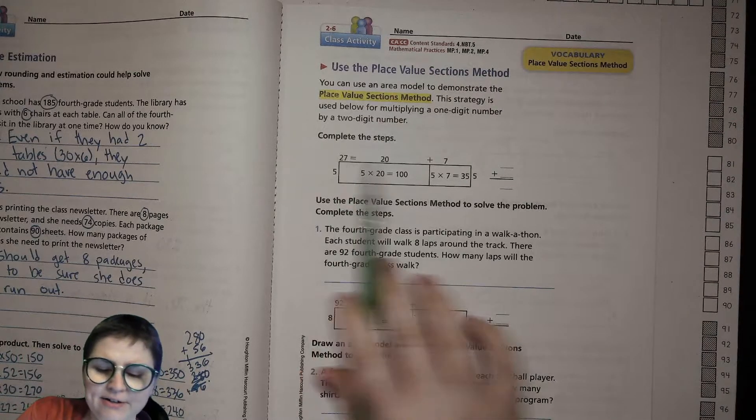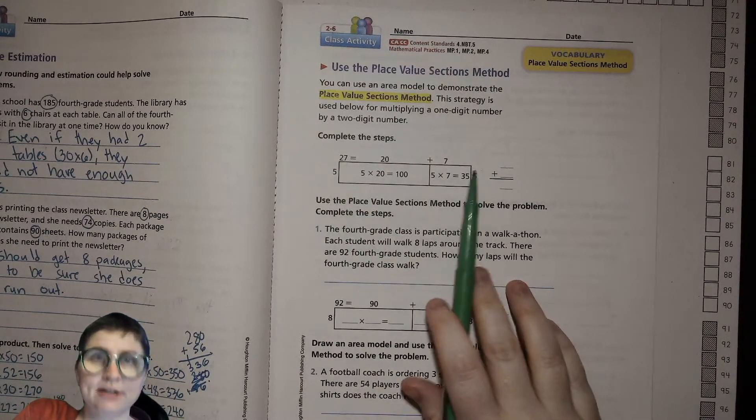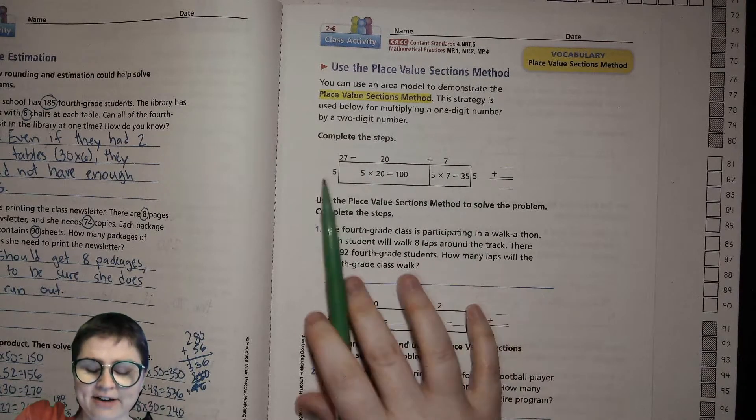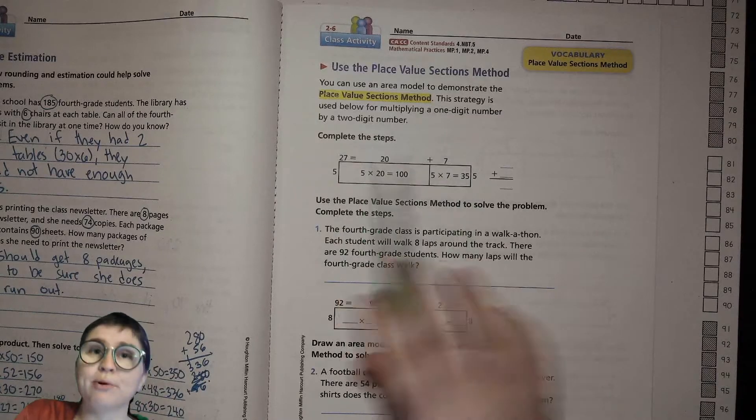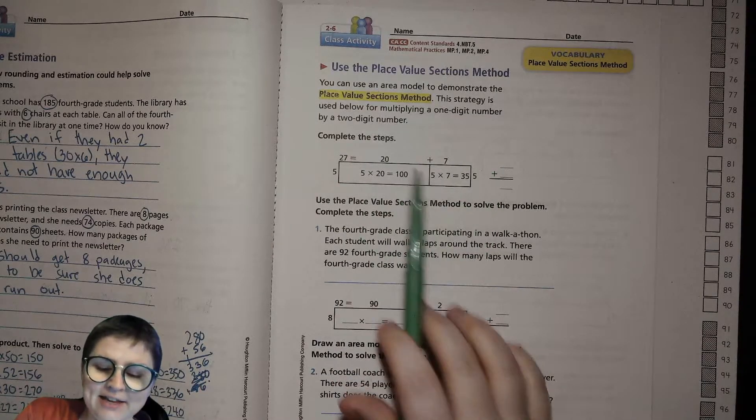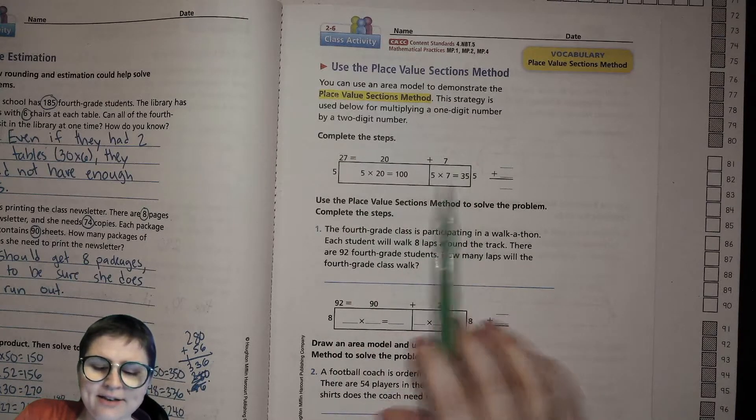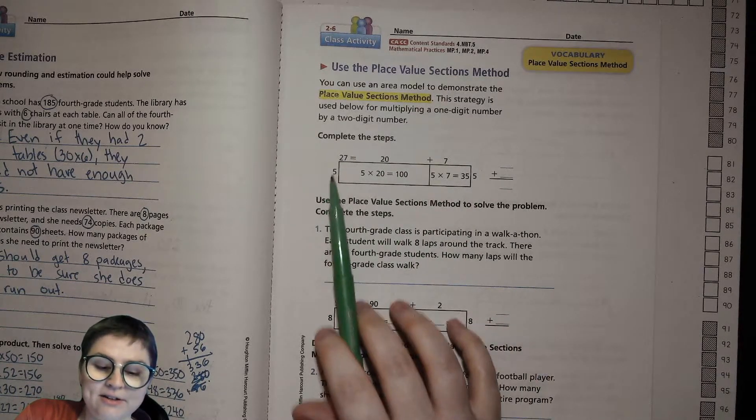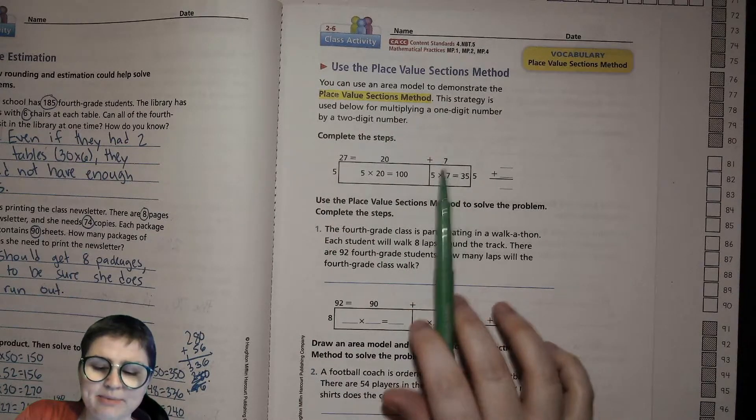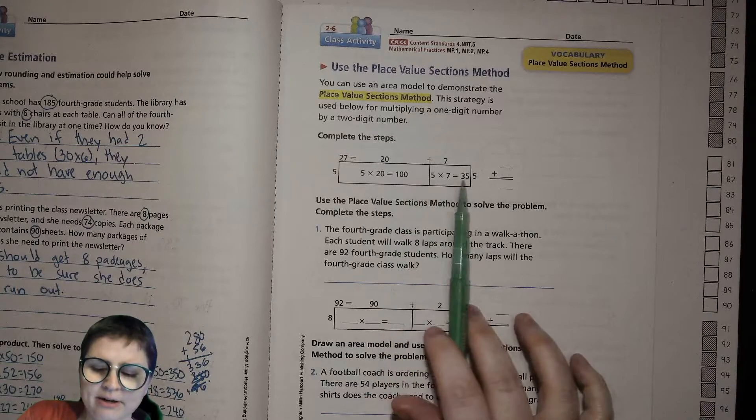Here we have our area model. They put the factors on the sides: 5 and 27. They've broken the 20 and the 7 apart based on their place value, and then inside the box they're writing 5 times 20 and 5 times 7, with the answers inside the boxes.